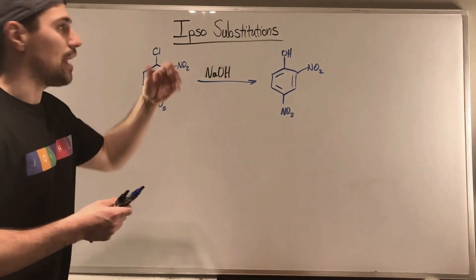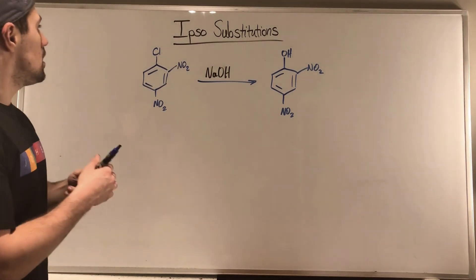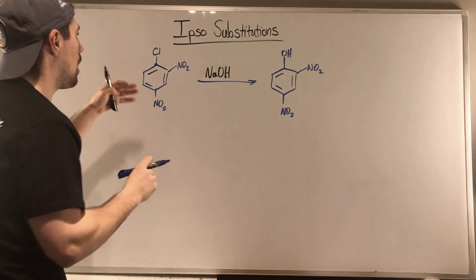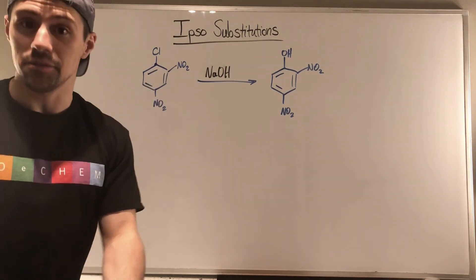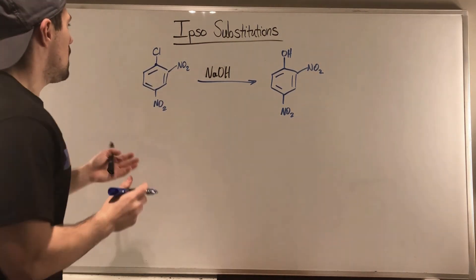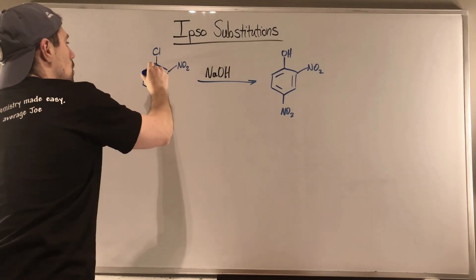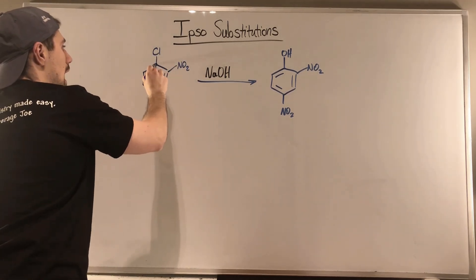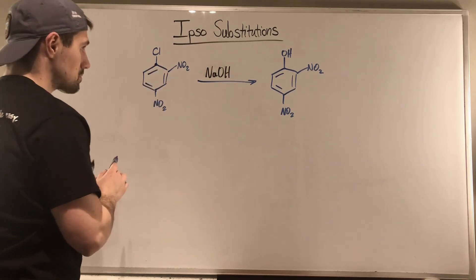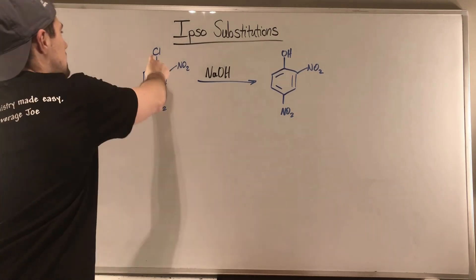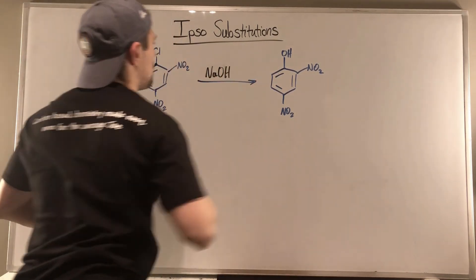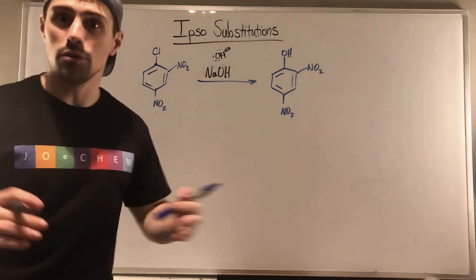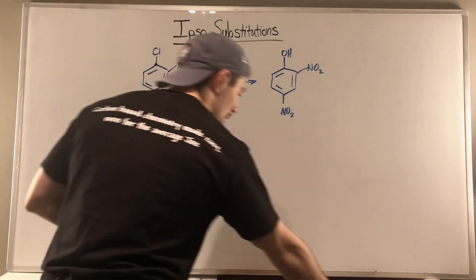Looking at our substrate, we have a good leaving group here in chlorine — that's our non-hydrogen group leaving the benzene ring, hence the Ipso Substitution. And not only that, but the other key criterion is that we need an electron-withdrawing group in at least one ortho or para position. In this example we actually have both ortho and para covered. Through the substitution, we displace our chlorine and tack on our nucleophile, which here is hydroxide — a lover of positive charge.